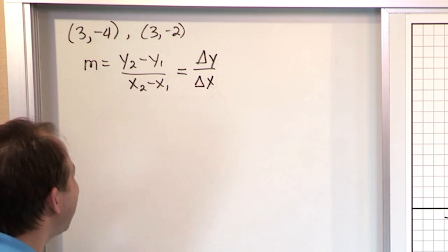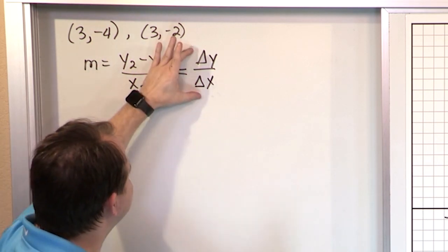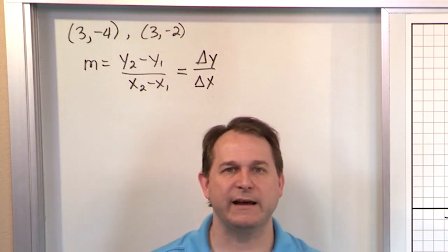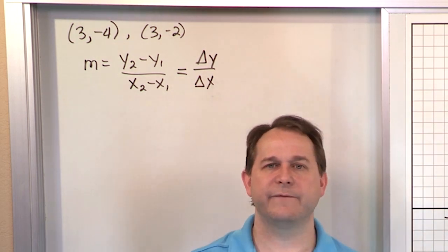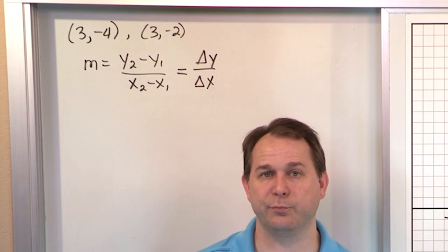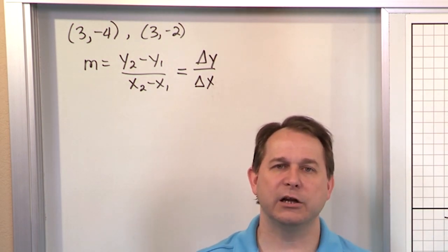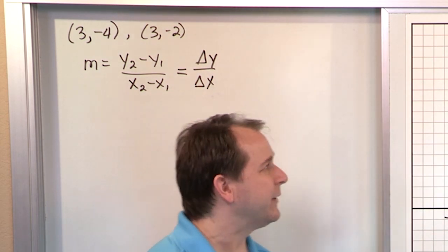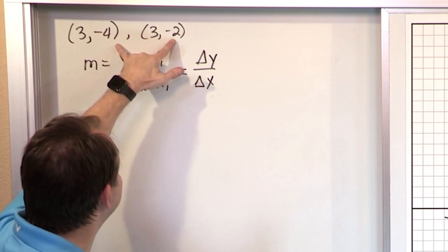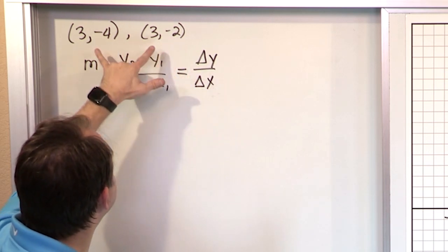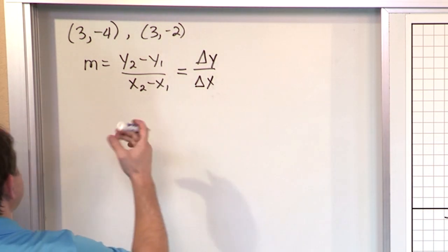We divide change in y by change in x. This is a great equation because it's very descriptive — we're taking the change in y, which is the rise, and dividing it by the change in x between two points, which is the run. It's compact and doesn't clutter your paper, but it doesn't hide anything either. You subtract y-values to get delta y, and subtract x-values to get delta x.